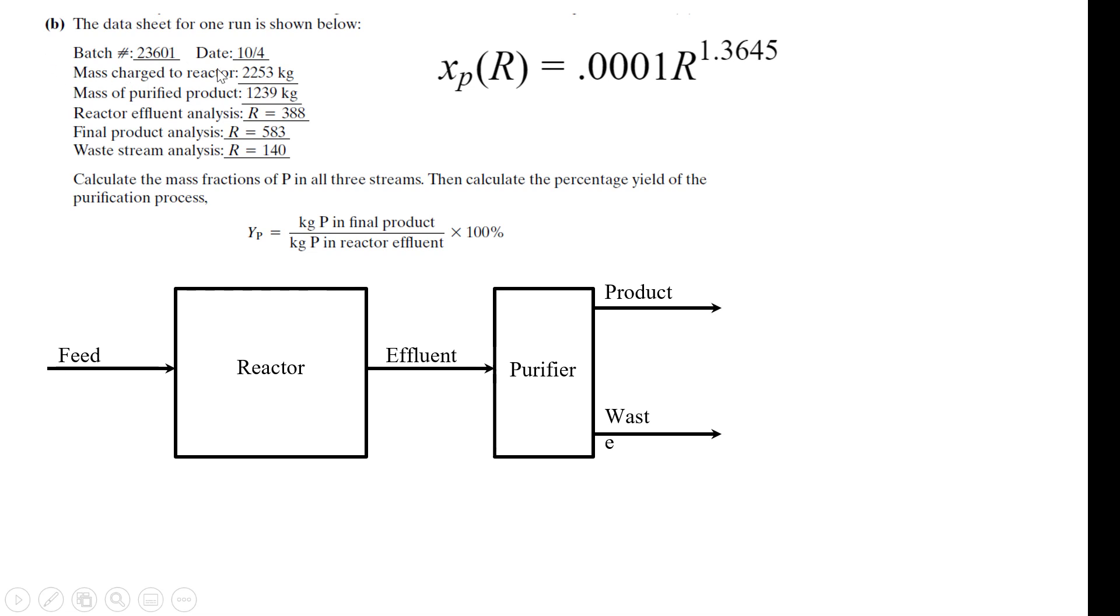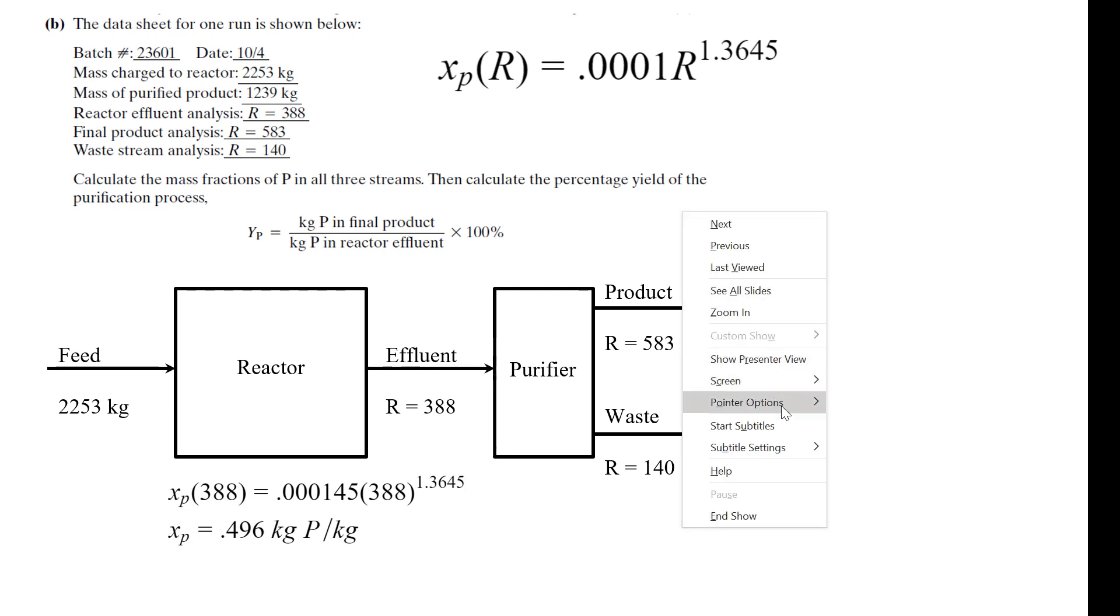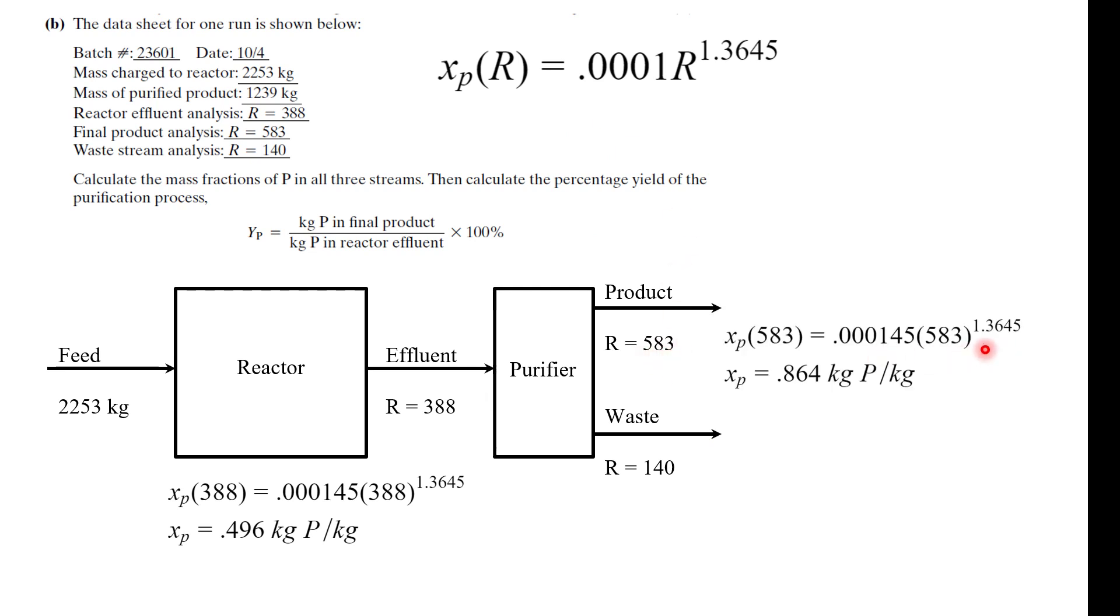So brilliant, now we have our equation for XP as a function of R. So if we can continue with part B, now we have to do a bit more analysis on the system. So let's read what this says. The mass charge of the reactor, 2253 kilograms. We can start filling some stuff in. It should look a little something like this. We have the feed, the mass, the effluent. We have the R values and look, we have a function that takes in R values so we can convert these into the mass fractions. This is the mass fraction as a function of R. I can plug in 388, I can get the mass fraction for the effluent stream. I have 583, I can plug in 583 and 140. We have all these mass fractions using the data that we just obtained.